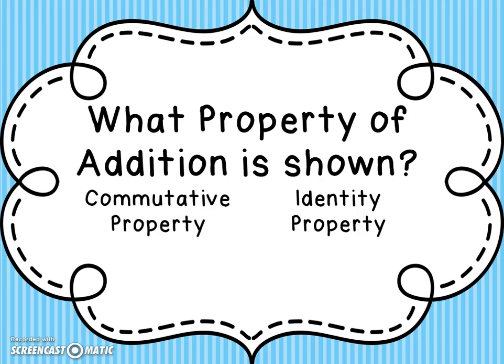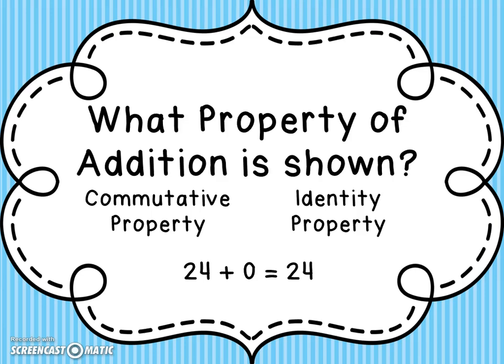What property of addition is being shown — the commutative property or the identity property? We have 24 plus 0 equals 24. If you said the identity property, you are correct. Next: 0 plus 37 equals 37. If you said the identity property, you are correct.